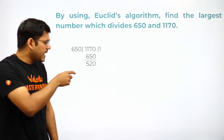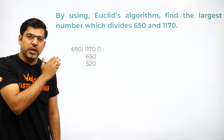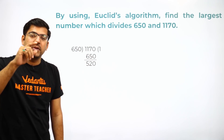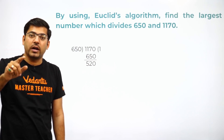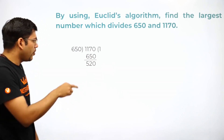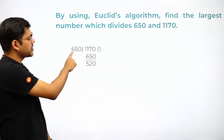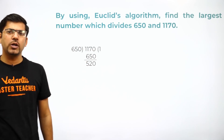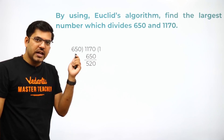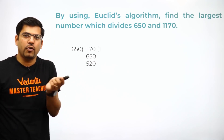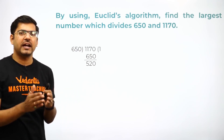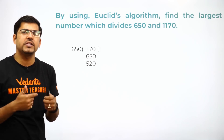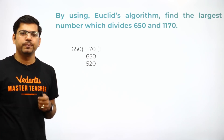The steps I am showing you can be done in rough, but writing the Euclid Division Algorithm — that is, dividend = divisor × quotient + remainder — is important. So for here you will write: 1170 = 650 × 1 + 520. I recommend writing it in the fair copy so the examiner can clearly see that you have done it right and it will be easy to evaluate.